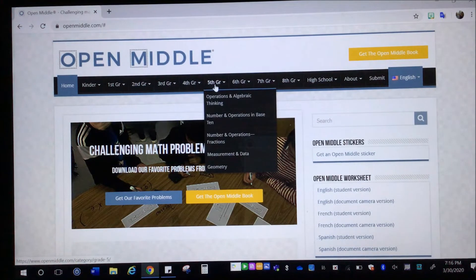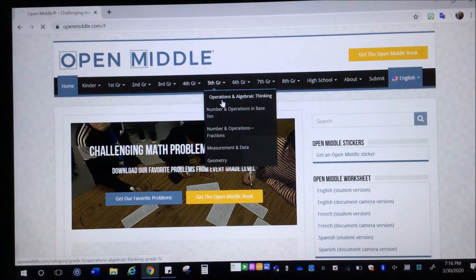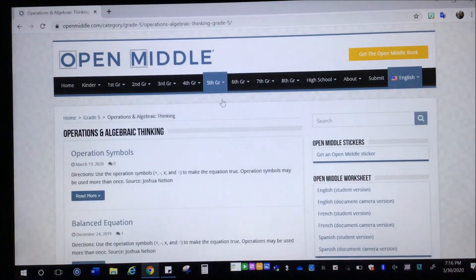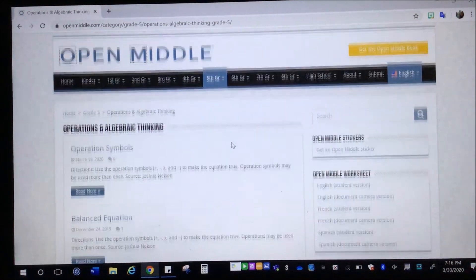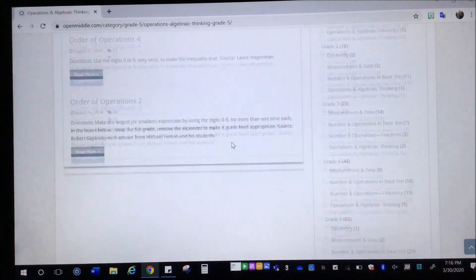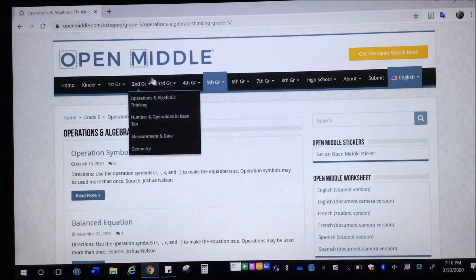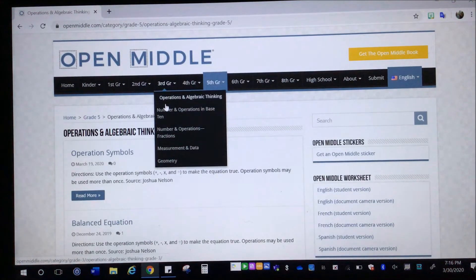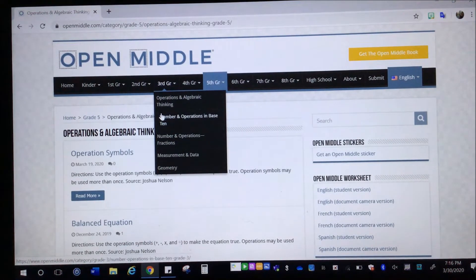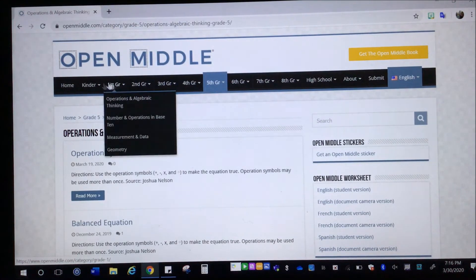I'm going to show you kind of how to play around with it. So if you're a fifth grade teacher or student, you could go into each domain. So there's operations and algebraic thinking, for example, you can see here lots of different problems. And then you can read more about them to see. So let's see in third grade. We have operations and algebraic thinking, number and operations in base 10, number and operations, fractions, measurement and data, and geometry. So any of those for all of them.